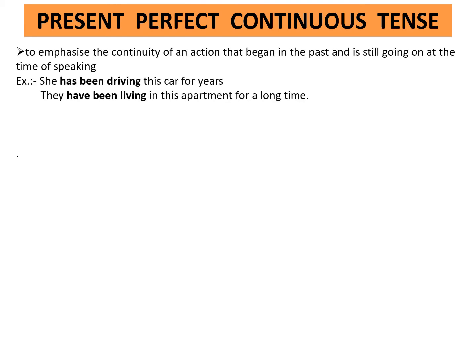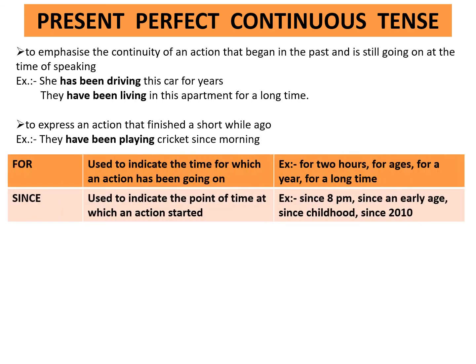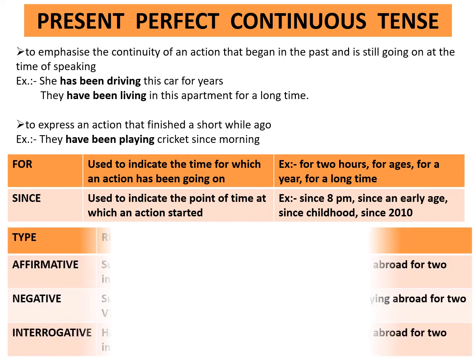Present perfect continuous tense emphasizes the continuity of an action that began in the past and is still going on at the time of speaking. Example: She has been driving this car for years. They have been living in this apartment for a long time. It also expresses an action that finished a short while ago. Example: They have been playing cricket since morning. In these sentences, 'for' and 'since' are used. 'For' indicates the time duration of the action, e.g., for two hours, for ages, for a year. 'Since' indicates the point of time at which an action started, e.g., since 8pm, since childhood, since 2010.